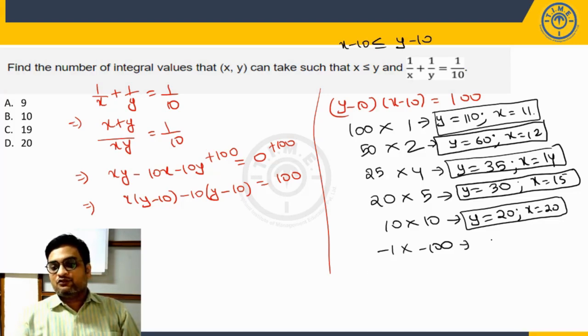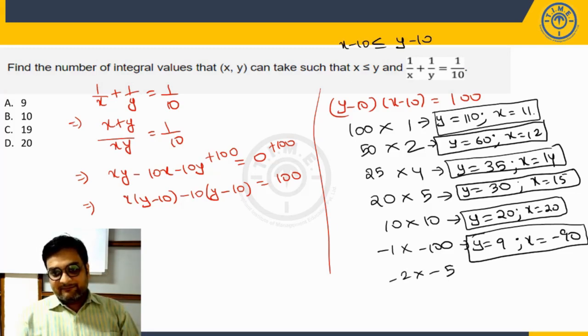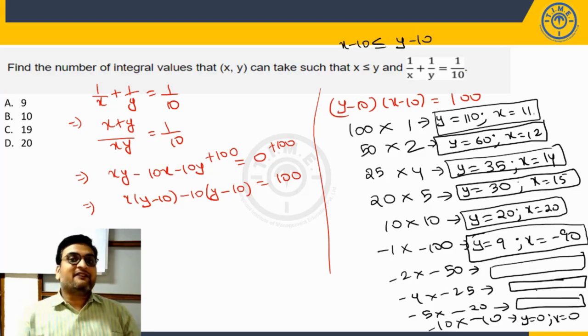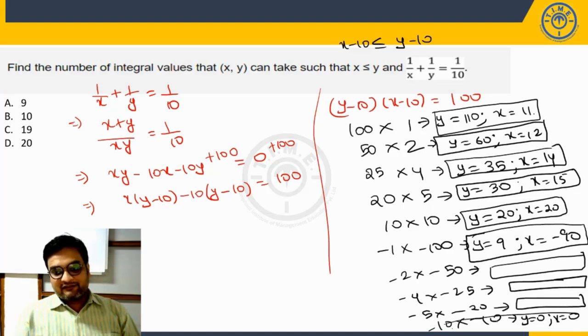Minus 1 into minus 100 will also give us this. This will give us what? y minus 10 equal to minus 1 would mean y is 10 minus 1, 9. x is minus 100 plus 10, minus 90. This will again give us a solution and again x is less than equal to y, it will work. Minus 2 minus 50, this will give me one more solution. Minus 4 minus 25 will give me one more solution. Minus 5 minus 20 will give me one more. Minus 10 minus 10 will not give us any solution because in this case, you will get the value of y as 0. x also as 0. But if you put x and y as 0, that would not be an acceptable solution because x and y are appearing in denominator and denominator of any equation can never be 0. It is not defined, so we will not take this.